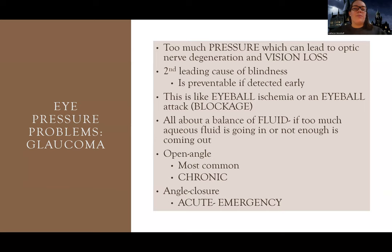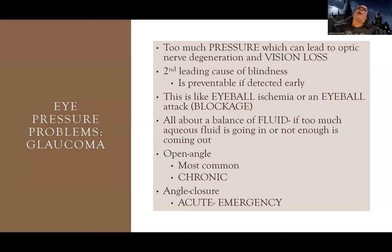Think of this as like eyeball ischemia. All of the blood vessels in your eye are in the back, and there's pressure building up in the front of your eye because stuff is not draining correctly. It leads to pressure on the back of your eye, which can lead to blindness. In the front of your eye there is an angle that is usually open to allow for drainage of what we call aqueous fluid — eyeball fluid that is supposed to be draining.